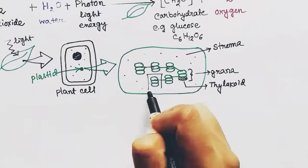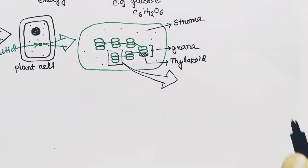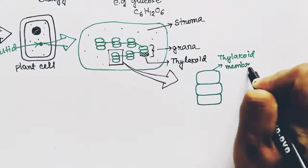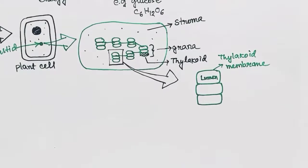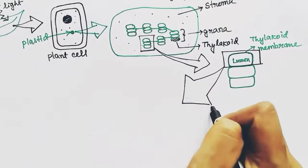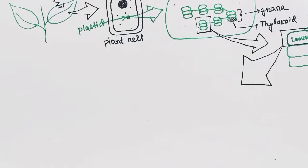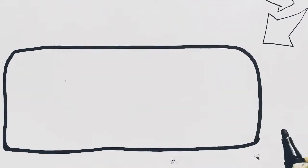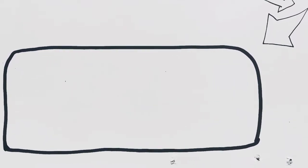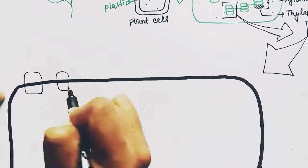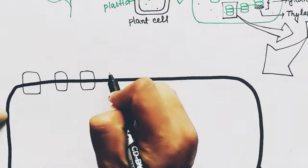Now we are zooming into the grana. It has three thylakoids in it. Each thylakoid has a thylakoid membrane surrounding the lumen. Now we will zoom into one thylakoid — this is a zoomed view and the black border is the thylakoid membrane. Now there are some special proteins present in the thylakoid membrane. The names we will discuss later; first we will understand what is happening in photosynthesis.